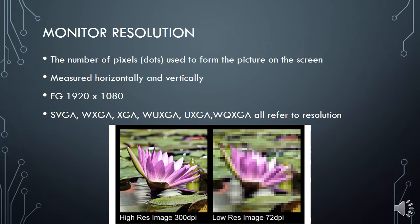Resolution is the number of pixels, or dots, used to form the picture on the screen. The number of pixels is measured horizontally and vertically. A typical resolution would be 1920 by 1080 pixels. When you look at a monitor it will typically say SVGA, WXVGA, XGA, or other names ending in GA — these all refer to resolution. When buying a monitor, look for a high resolution, which gives a much nicer picture. At the bottom, you can see that the picture on the right has very low resolution and becomes pixelated, where you can see little blocks — which looks horrible.